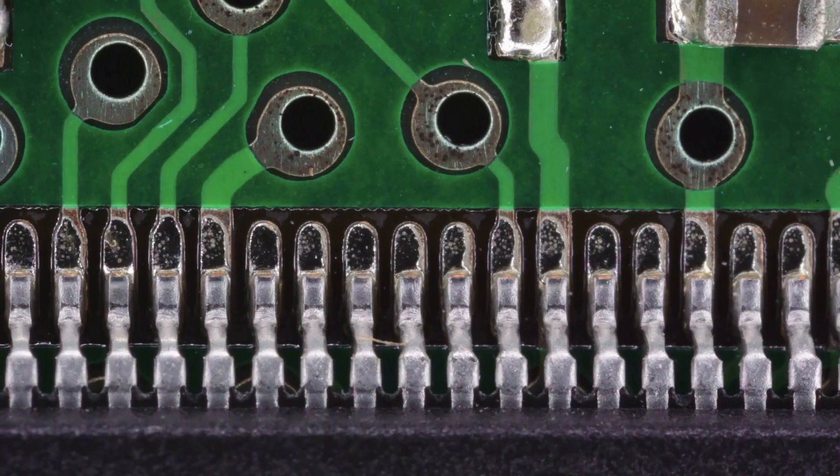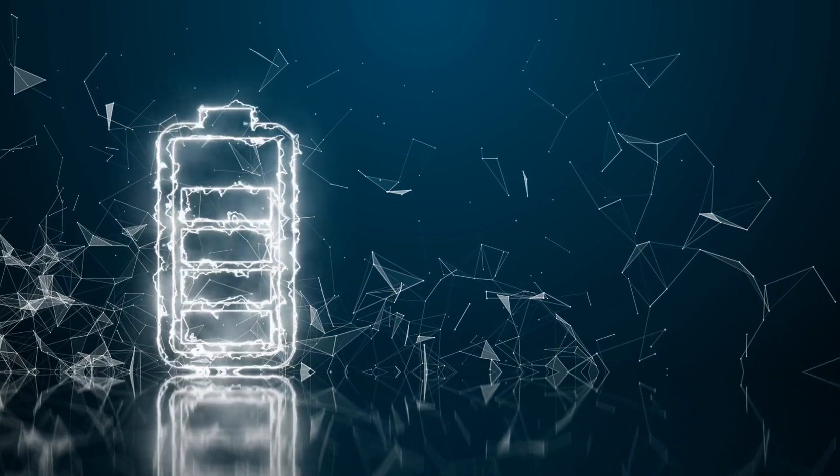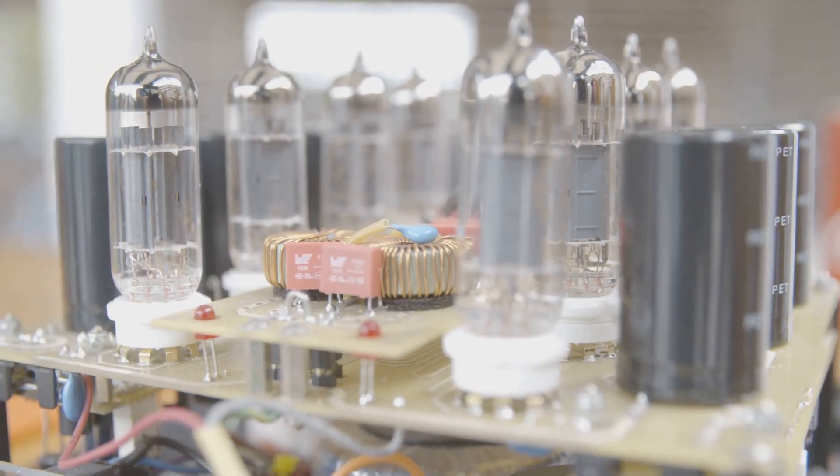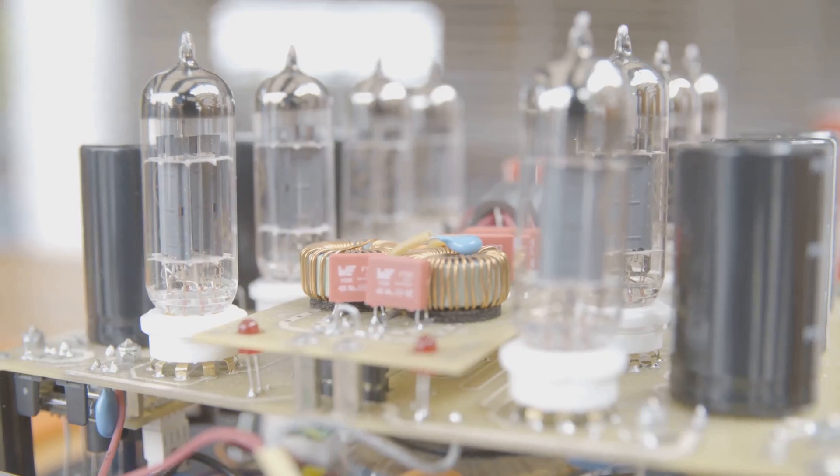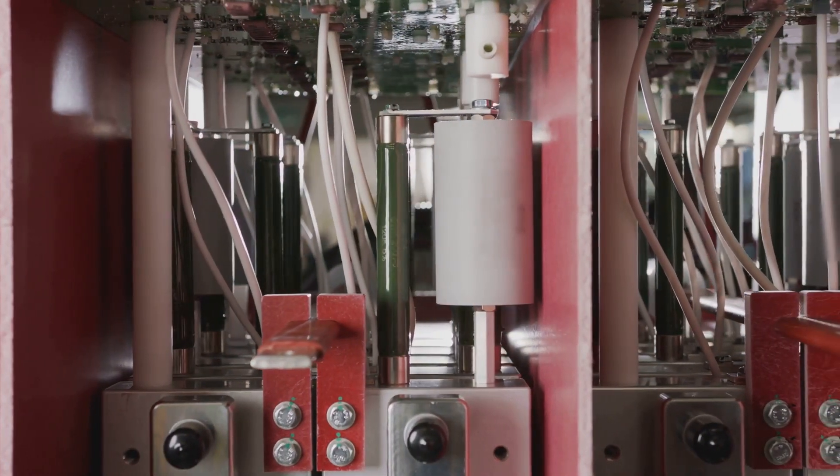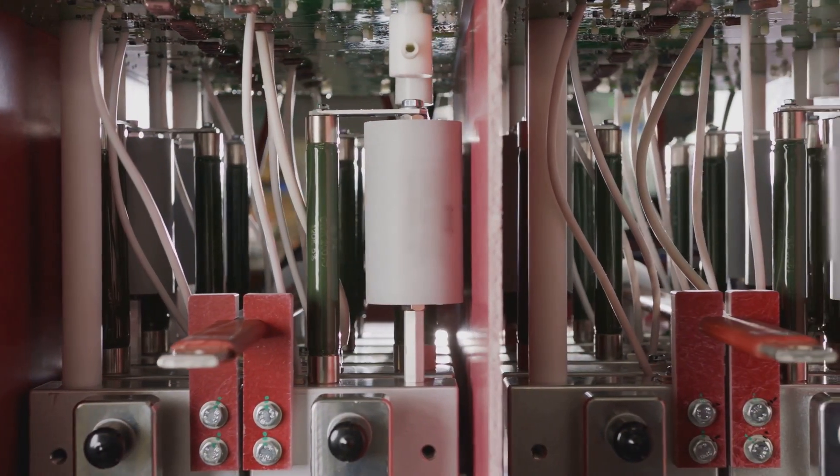Diodes are essential components in electronics. They act like one-way valves for electricity. This means they allow current to flow in one direction but block it in the other. This unique property makes them incredibly versatile.